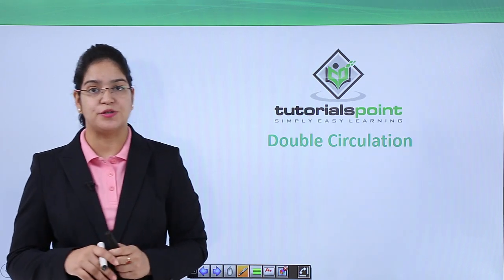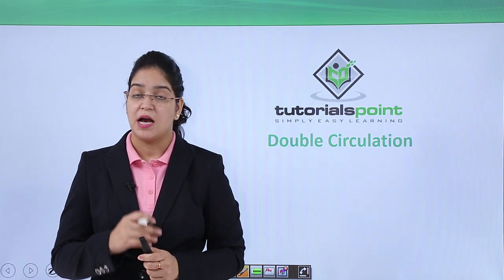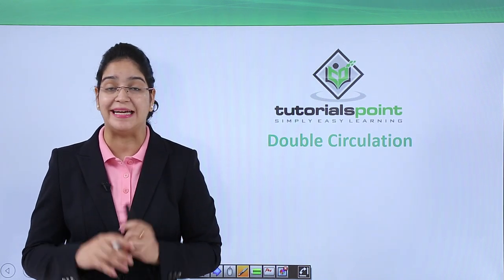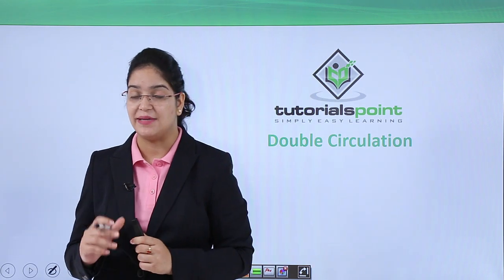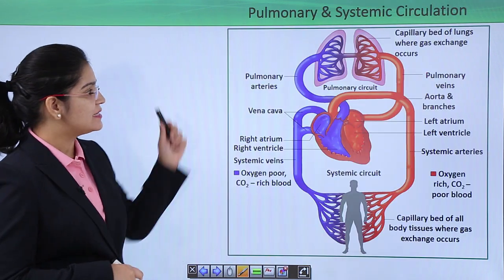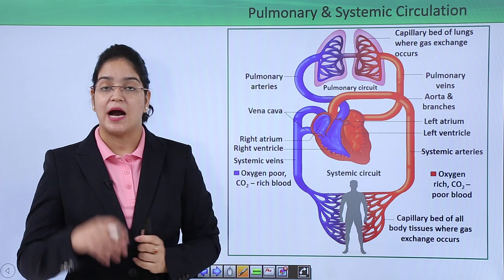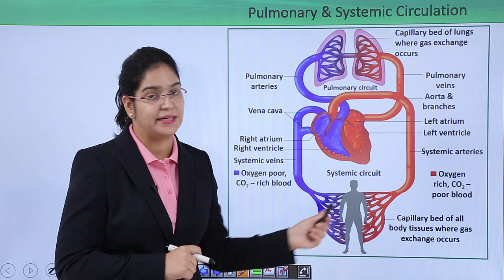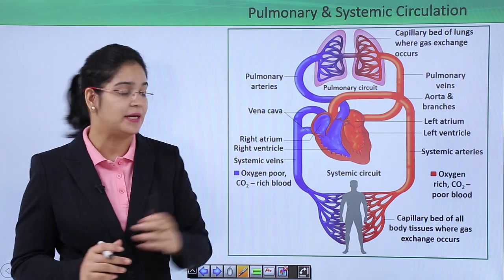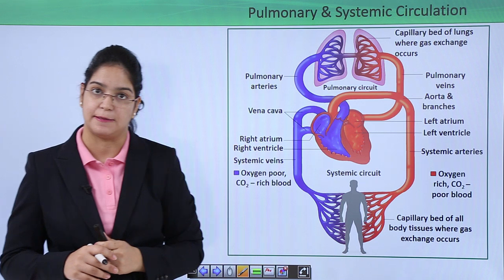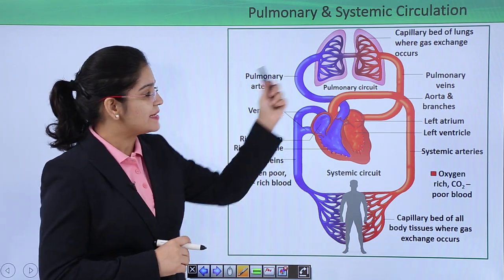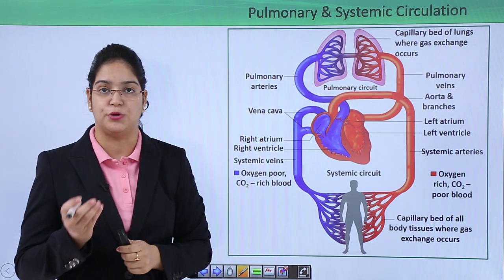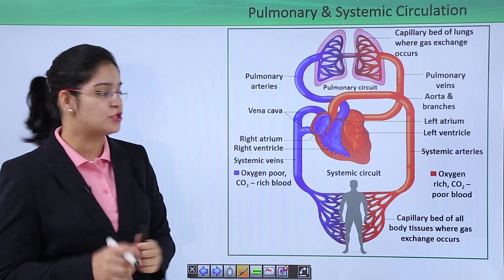Today we are going to learn about double circulation. Our circulatory system is not a single simple circulation but a double complex circulatory system. It mainly contains two circulatory systems: the systematic circulation, the larger one, and the smaller one, the pulmonary circulatory system. Systemic circulation occurs through a systemic circuit and pulmonary circulation occurs through a pulmonary circuit.